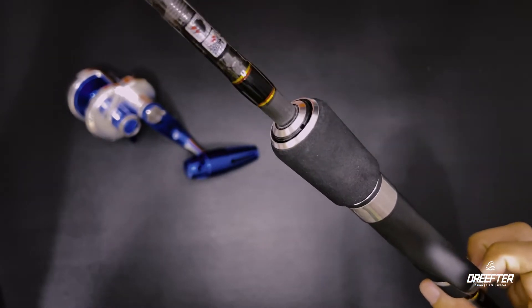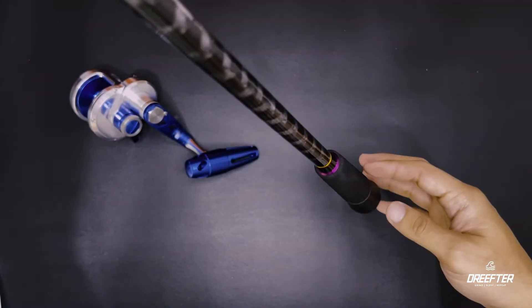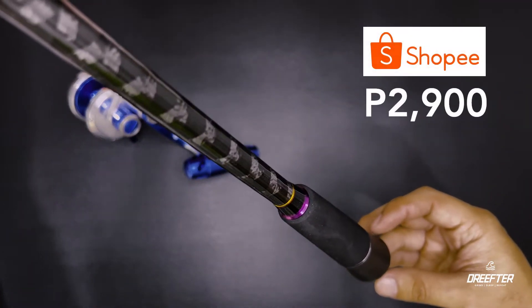At pasok ito sa PE 2.5 to 3.5 na braid lines. So nabili ko ito guys sa Shopee sa halagang 2,900.